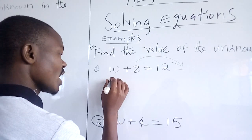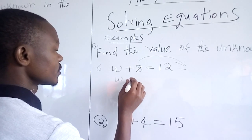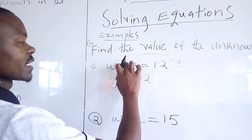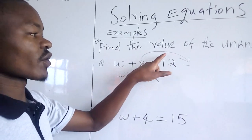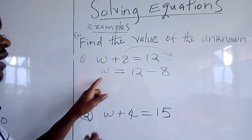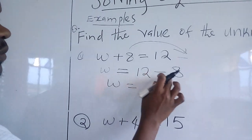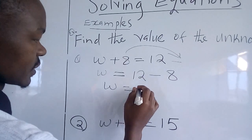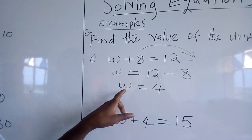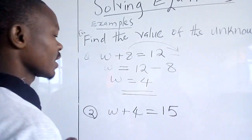So we are going to have W is equal to 12. Instead of plus 8, we are going to have 12 minus 8. Then we are going to have W equals 12 minus 8. We get 12 subtract 8, we get 4. Therefore, W is equal to 4. And that is our final answer.